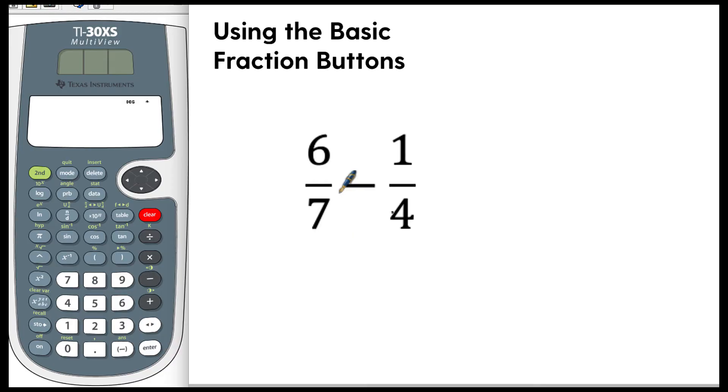So if you want to do this problem right here 6 over 7 minus 1 over 4, what you would do is you've got the n over d which stands for numerator over denominator and you can see it blinking up here. You can put in your 6, arrow down, then put in 7, arrow over. Now it's blinking to the right so now you can put in your operation which in this case is subtraction and then you hit n over d again and you've got 1 down over 4 and then you hit enter and you're going to get your answer.